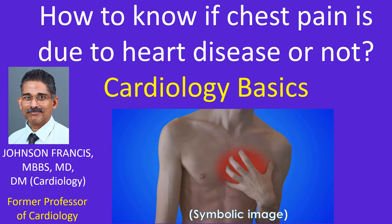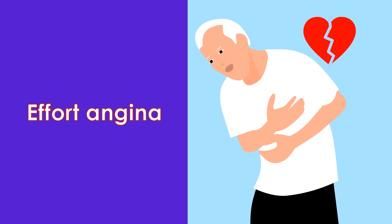It is not always possible to be certain about the origin of chest pain just by its characteristics, as the variation between individuals is quite a bit. There can be a lot of overlap between symptoms due to heart disease and disease of nearby organs. Still, some general observations are possible regarding chest pain originating from the heart.